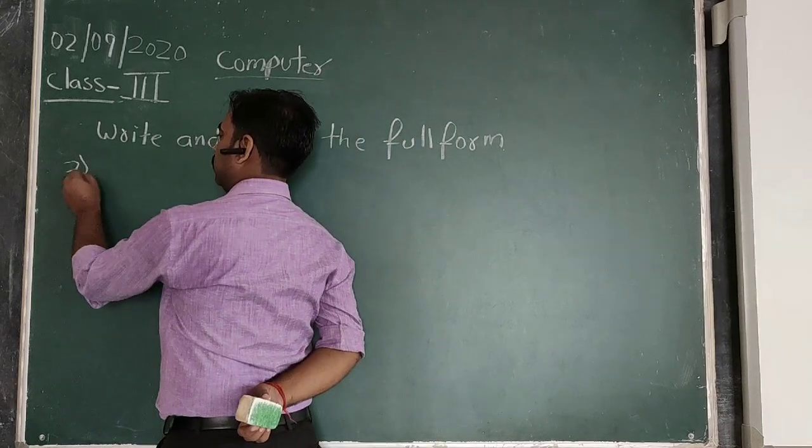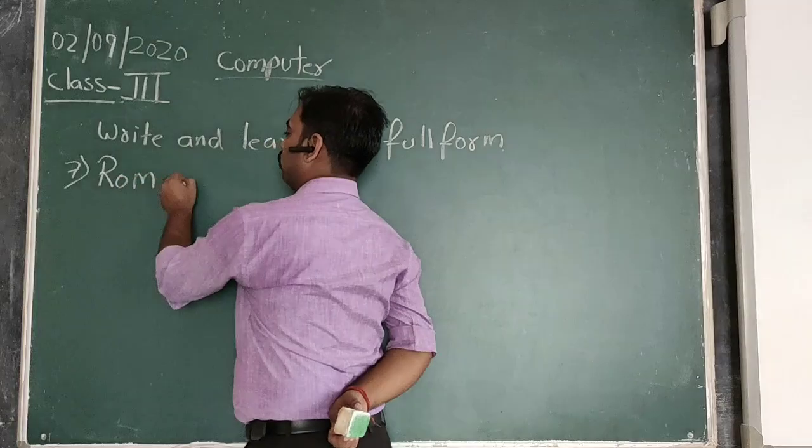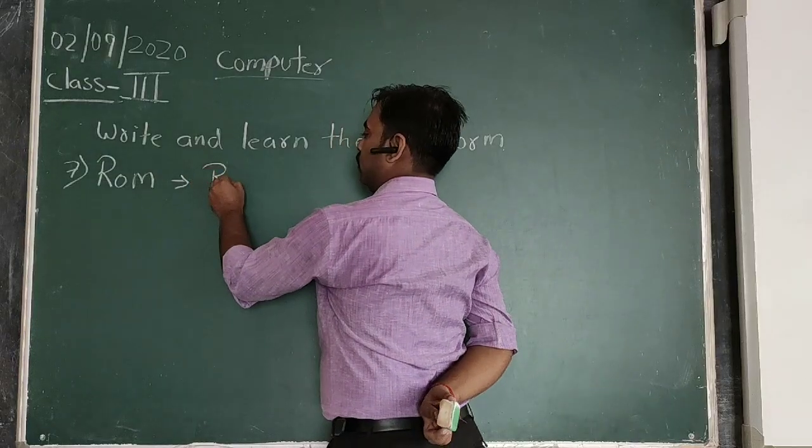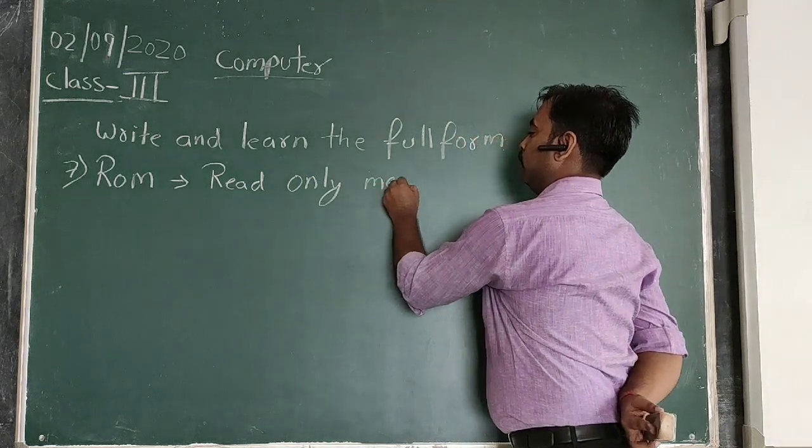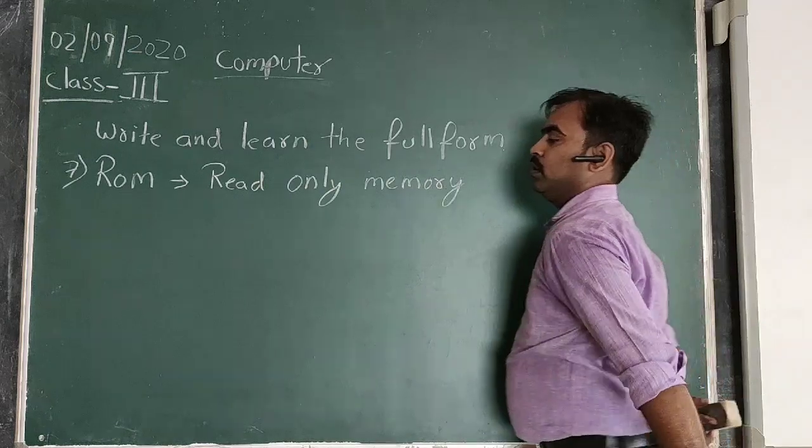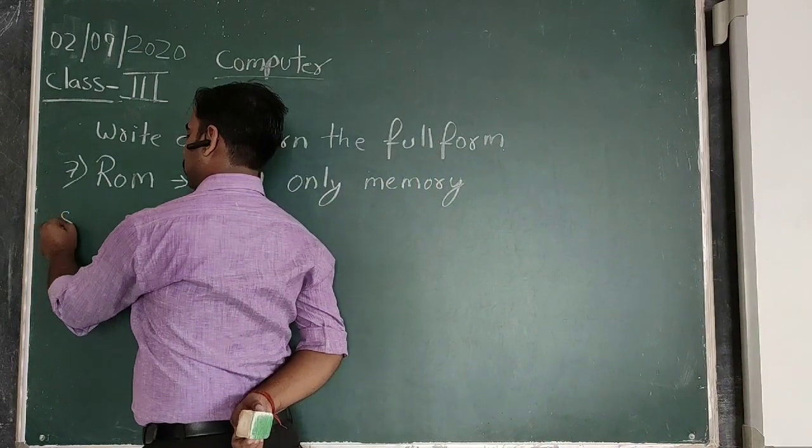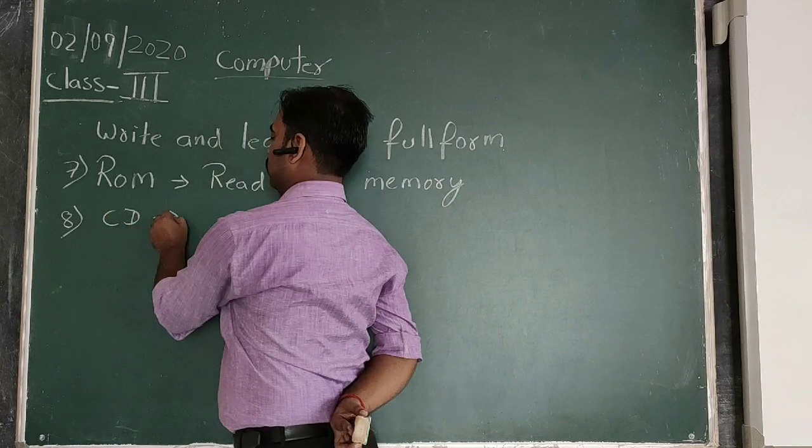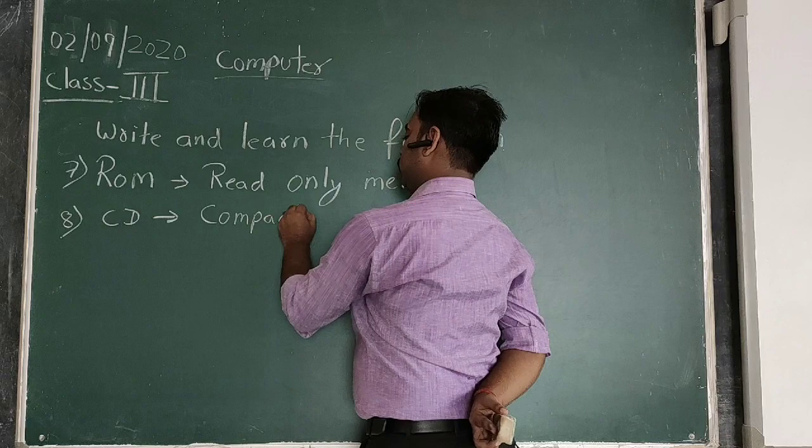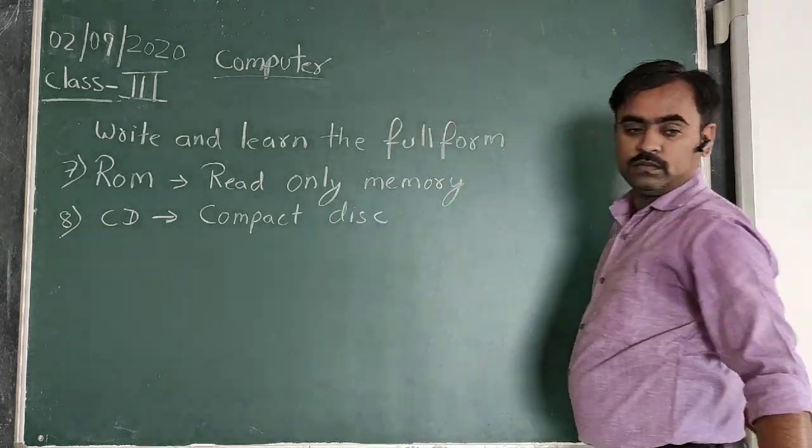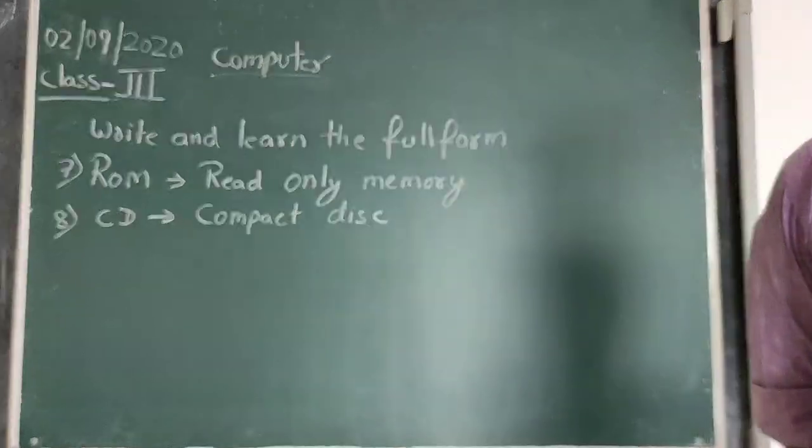Now we move to the next one. Seventh one is ROM - Read Only Memory. And eighth is CD - Compact Disk.